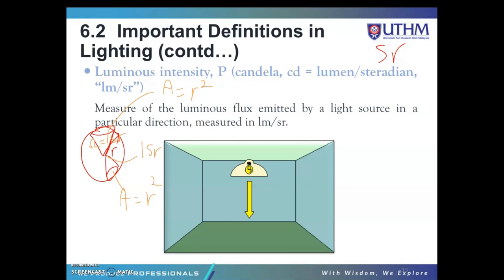A steradian is the solid angle subtended at the center of a unit sphere by a unit area on its surface. The sphere has radius R, and the area A of the highlighted surface patch is R squared. The solid angle Ω equals A over R squared steradians.